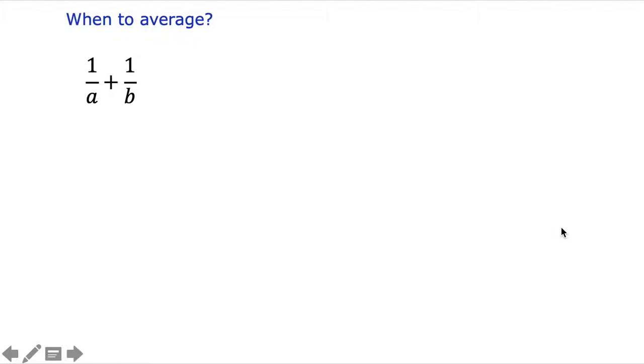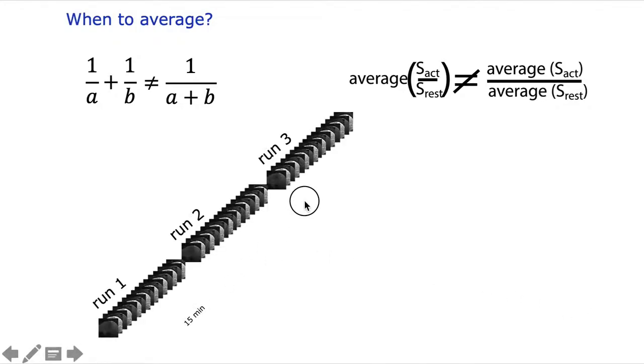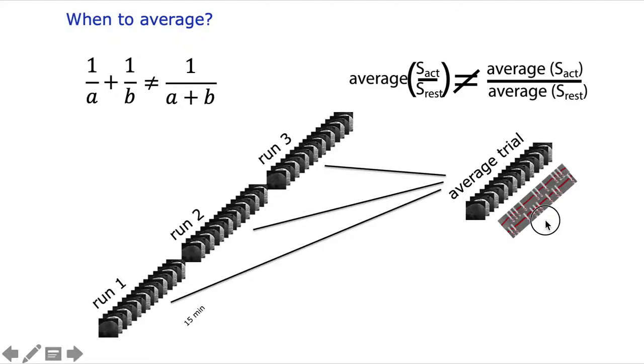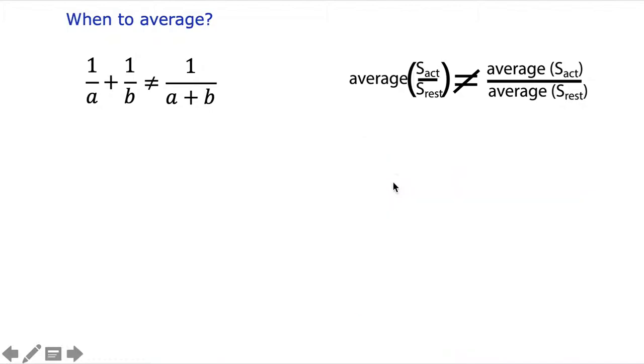Yet another lesson that we learned concerns noise amplification and noise management along the analysis pipeline for these high-resolution noise-driven data. For example, it really matters at which position along the analysis pipeline we do our signal extractions. You all know that 1 over A plus 1 over B is not the same as 1 over A plus B. This means that the average of signal change is not the same as the relative signal change of average signals. In other words, you get smaller signal changes if you take all your trials, first average them and then do your signal change analysis compared to doing the activity analysis on an individual run level and then average those results.